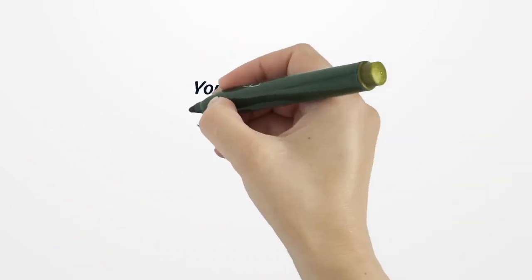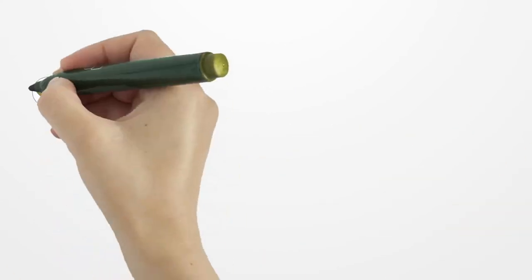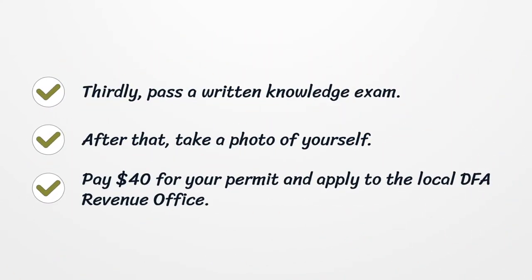You should have a minimal uncorrected visual acuity of 20/40 for an unrestricted license, and a minimal corrected visual acuity of 20/70 for a restricted license. Thirdly, pass a written knowledge exam. After that, take a photo of yourself. Pay $40 for your permit and apply to the local DFA Revenue Office.